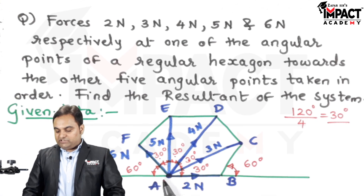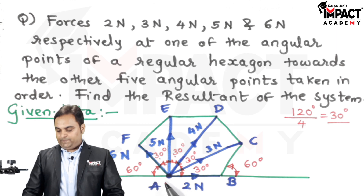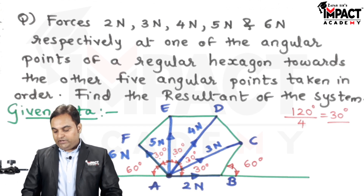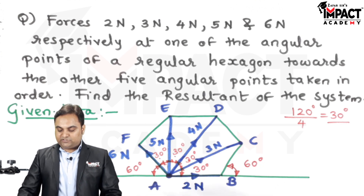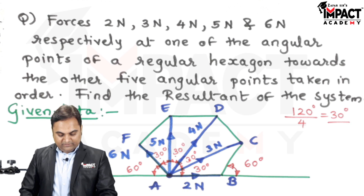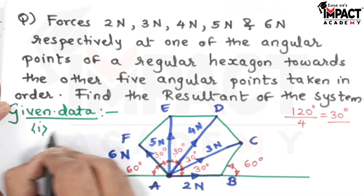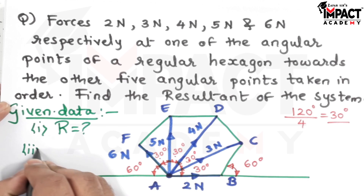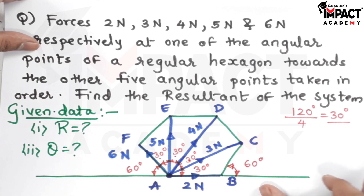Since all the forces originate from the single point A, this is a case of a concurrent force system. Now in the solution part, I'll draw the same diagram showing just the forces excluding the hexagon. We need to find the resultant in terms of location and magnitude — magnitude is R and location is theta.